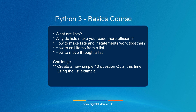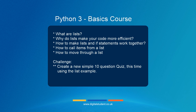We're going to look at how to call items in a list and move through a list so we can use one list for all ten questions. The challenge at the end is to create a new simple ten-question quiz using lists. You should end up with a way of creating a quiz using both if statements and lists, and you'll see how they work together to make really nice code.